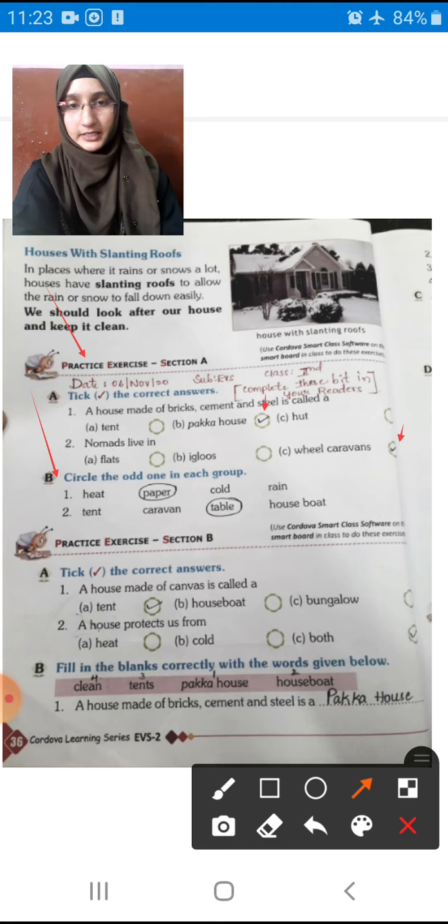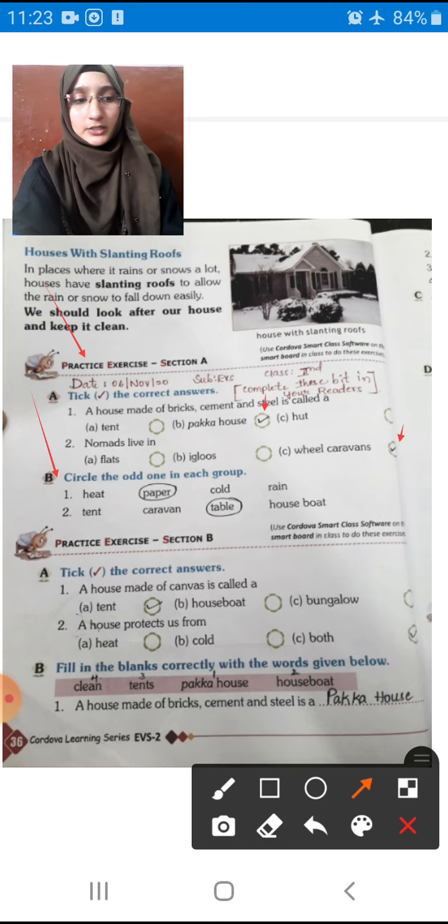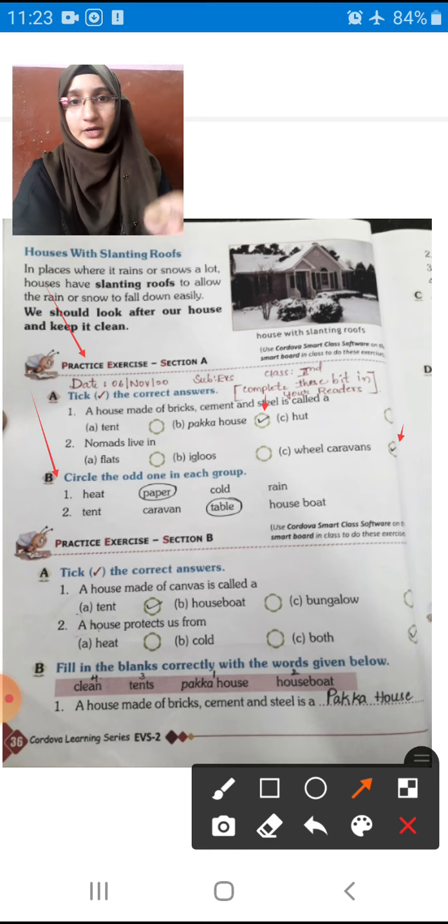We all know how to do the circling, right? As a round. You can see here also as below I have done. First one: Heat, second paper, third cold, fourth rain. Heat, cold, rain - these three things are the ones that the house protects us from. Paper is the odd one. So we have to put circle to the paper.